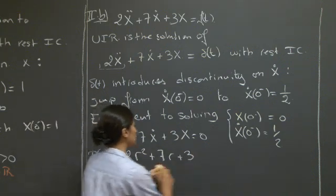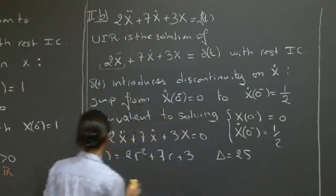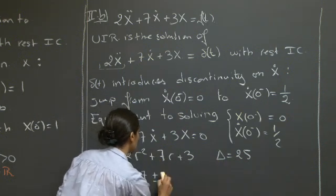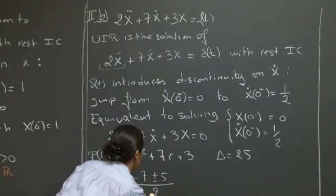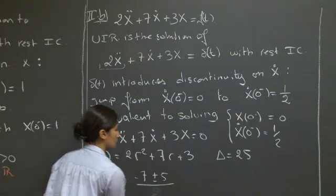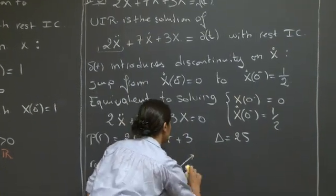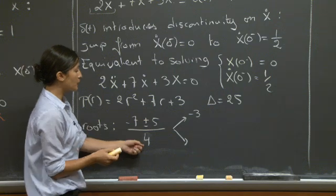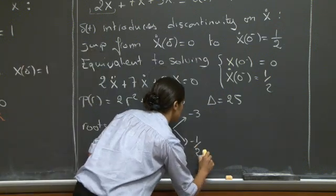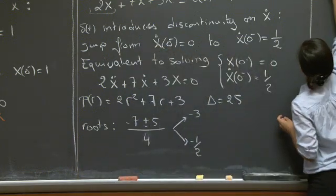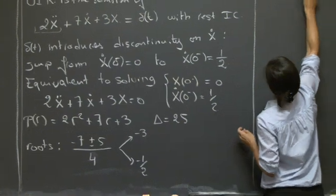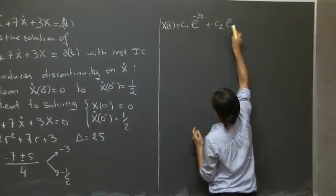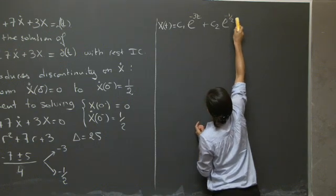So we use the characteristic polynomial as we did before. This characteristic polynomial would have a discriminant of 25, which gives us simple roots that we can compute. So it would be minus 7 plus or minus the square root of the discriminant over 4. So we have two roots: minus 7 minus 5 over 4, minus 12 over 4, which is minus 3. Minus 7 plus 5 over 4, which just gives us minus 1 half. So we can write down the solution to this problem as c1 exponential, the root that we just found, minus 3t, plus c2 exponential, the other root, minus 1 half of t.